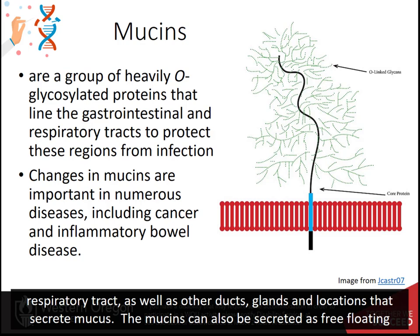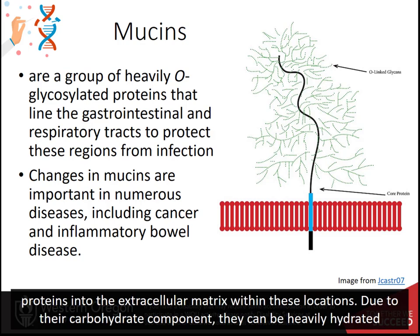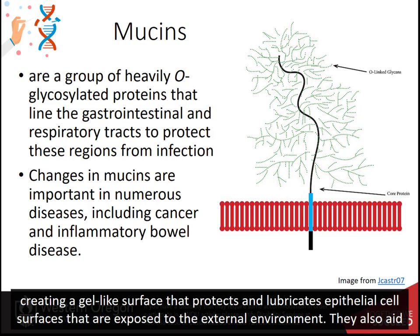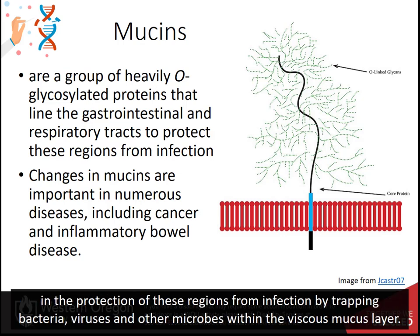The mucins can also be secreted as free-floating proteins into the cellular matrix within these locations. Due to their carbohydrate component, they can be heavily hydrated, creating a gel-like surface that protects and lubricates epithelial cell surfaces exposed to the external environment. They also aid in the protection of these regions from infection by trapping bacteria, viruses, and other microbes within the viscous mucus layer.